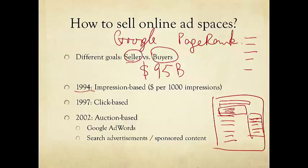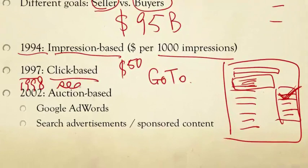So as long as I show you an advertisement, then you got to pay me. For example, $50 per 1,000 impressions. Then a company called GoTo, which later became Overture in 1997, introduced a different mechanism called click-based. So if I just show you and no one actually clicked on it, then I won't charge you. But if some of them actually clicked on it, then for every click, I'll charge you. Then along came Google in 1998 with the Google search engine.